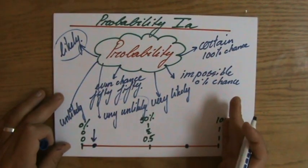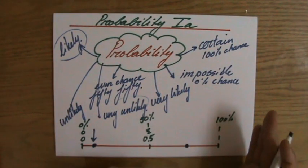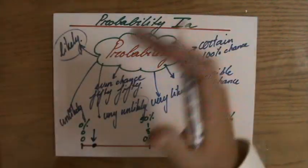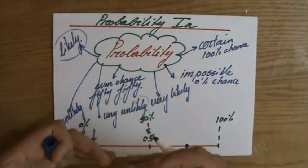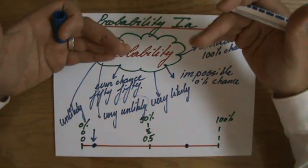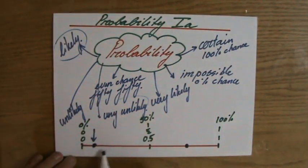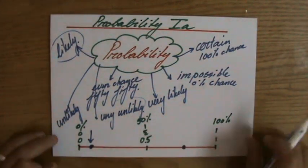But perhaps if you eat rice almost every day, then what is your chance that you're going to eat potatoes tonight? Perhaps it's somewhere more down at this region of the probability scale.